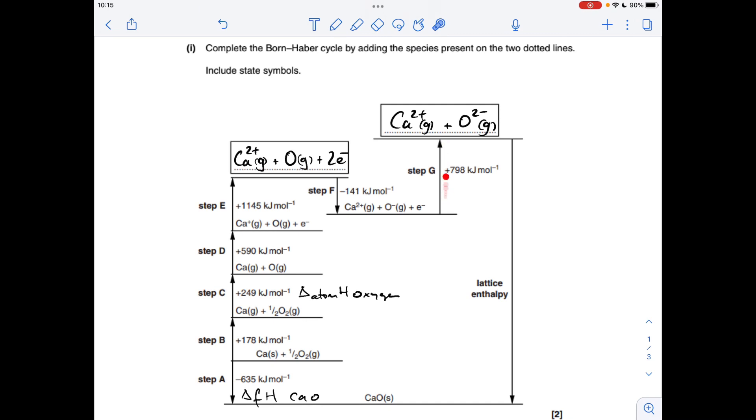And step G, which we've already talked about. What's happening here? Well we're going from O- gas to O2- gas. That electron's going on. So this is the second electron affinity of oxygen.